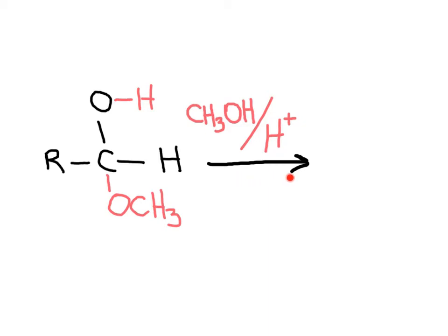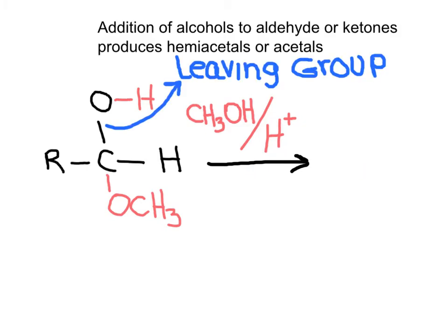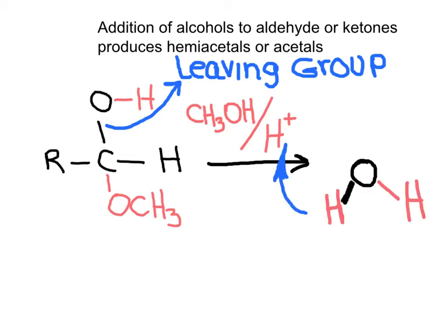In acidic conditions, if an excess of the alcohol is used, this hemiacetal will continue reacting to produce an acetal. In this reaction, the oxygen that was the carbonyl of the aldehyde will act as a leaving group. This OH will combine with the proton from the catalyst to be removed as a molecule of water. If this hydroxyl group combines with the hydrogen from the catalyst to form a molecule of water, this carbon will be lacking a bond. We have a carbon-oxygen methoxy that will be electron-rich and a carbon that is lacking electrons — a good combination to produce the acetal.